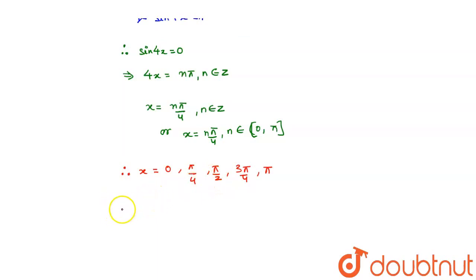But, we can see, only x equals pi by 4, and pi by 2 satisfy the equation. Correct?